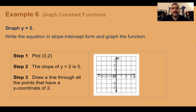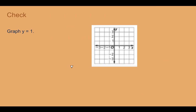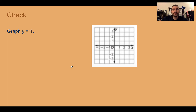Example 6: Graph the constant function y equals 2. In slope-intercept form this is y equals 0x plus 2, so the y-intercept is 2 and the slope is 0, giving a horizontal line through y equals 2. Check your understanding: Graph y equals 1. The answer is a horizontal line that is 1 unit high.